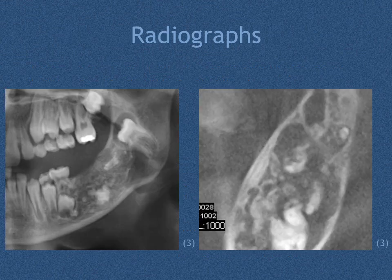The following two radiographs are examples of ameloblastic fibroodontomas. The radiograph on the left provides an example of a single entity mixed radiolucent-radiopaque within the posterior mandible. The radiograph on the right also is of the posterior mandible and illustrates the buccal and lingual cortical plate expansion.